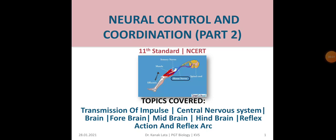Hello friends, today I am here with Neural Control and Coordination Part 2 of 11th Standard. In this session, we are going to discuss Transmission of Impulse, Central Nervous System, Brain, Forebrain, Midbrain, Hindbrain, Reflex Action and Reflex Arc. So, let us start the session.